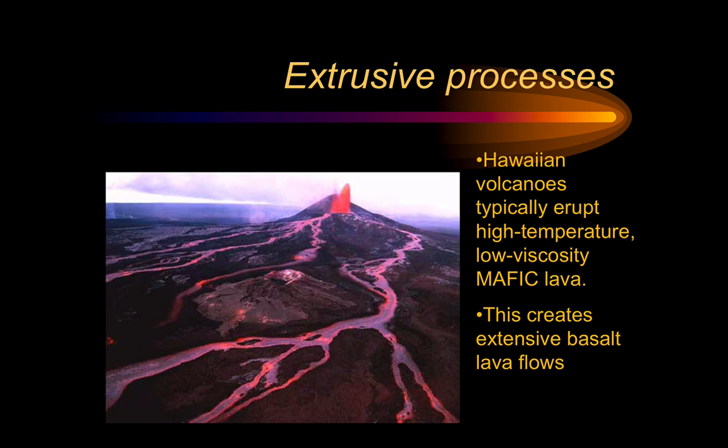In this image here you can see a volcano in Hawaii, typically erupting at very high temperature, very low viscosity, very fluid magma that's mafic in composition, and creating fairly extensive basaltic lava flows.